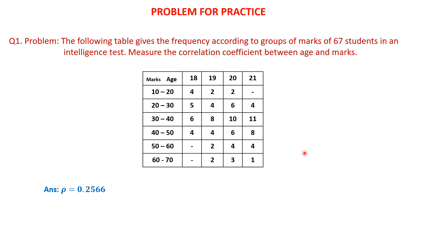Here is a practice problem, similar in approach to the one just solved, but with more class intervals. Wherever a dash appears in the table, it means there is no frequency — treat those cells as 0 and concentrate on the remaining cells. Kindly construct the two-way table and check whether you get the correct value of rho. The next video shall focus on rank correlation. Goodbye for now.